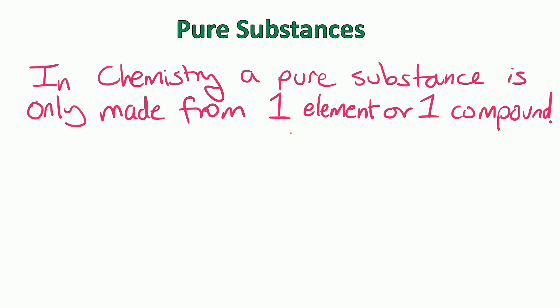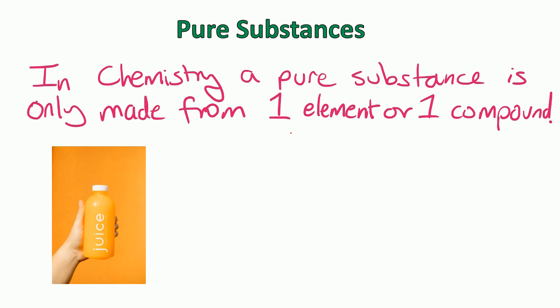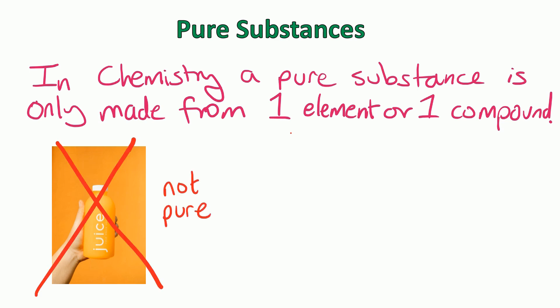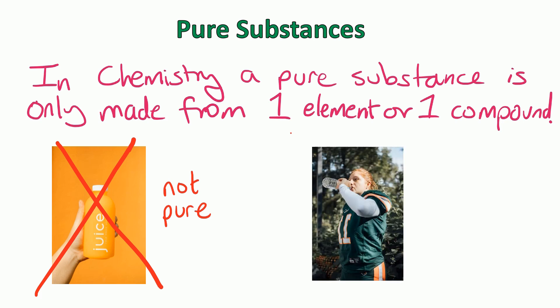In chemistry, a pure substance is only made from one element or one compound — in other words, it's a single substance. When we go to the supermarket and see bottles of orange juice that say 'pure orange juice', the supermarket means they haven't added anything extra like sugar or preservatives, but it doesn't pass the chemistry definition of pure. In chemistry terms, it's not pure because orange juice contains water, vitamins, and natural sugars — so it's not made from one element or compound.